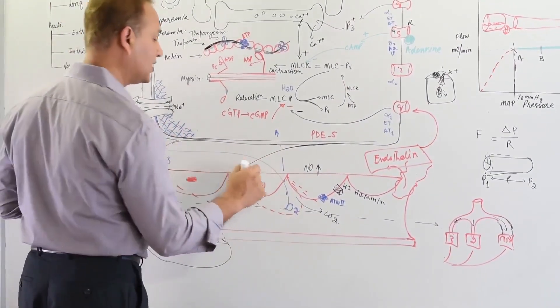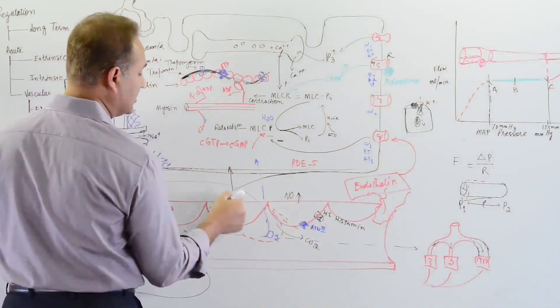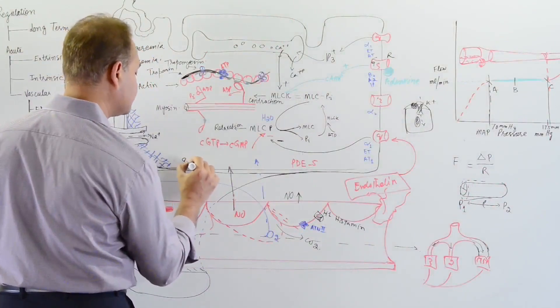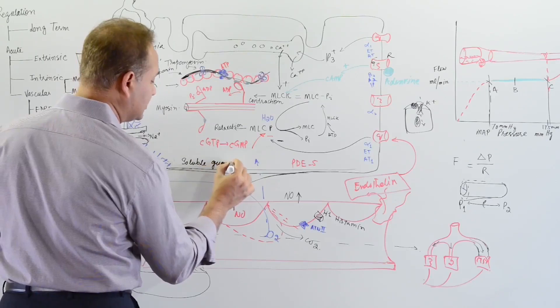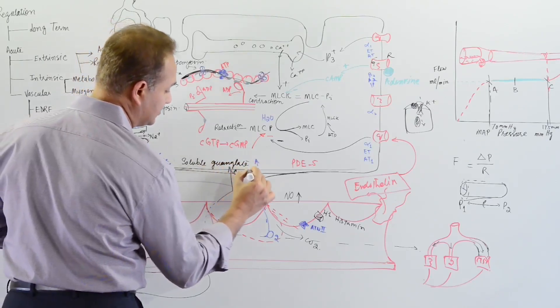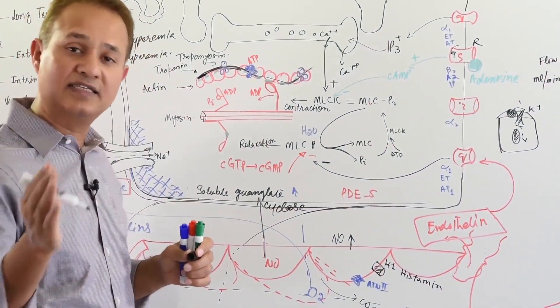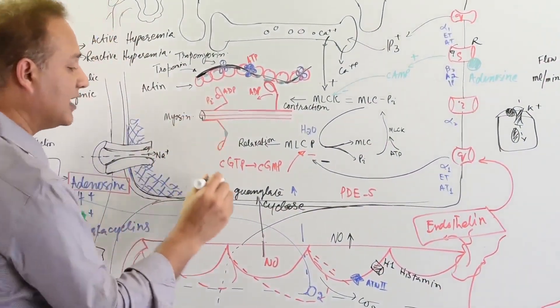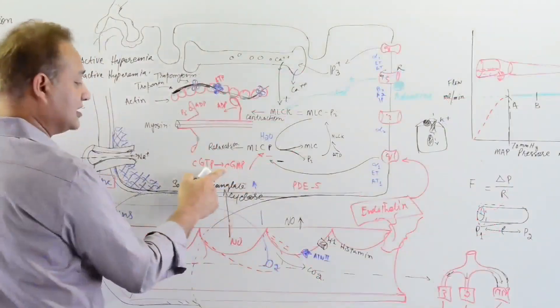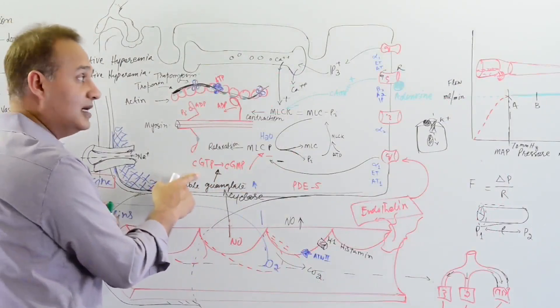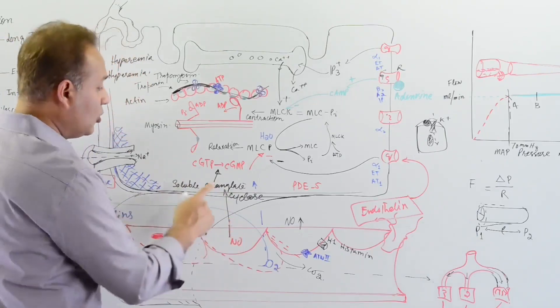What does nitric oxide do? When nitric oxide is released, it triggers soluble guanylate cyclase. What is the function of that enzyme? That enzyme triggers the formation of cyclic GMP from GTP, just like adenylyl cyclase triggers the formation of cyclic AMP.